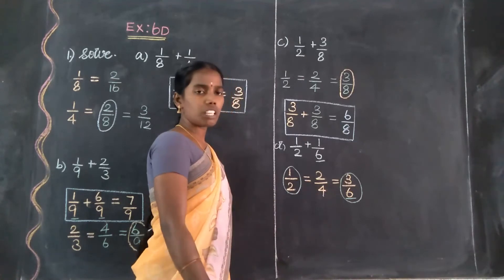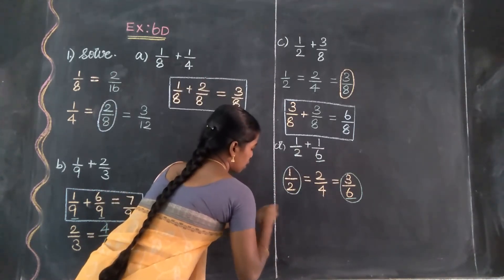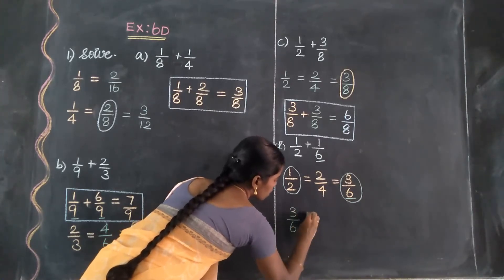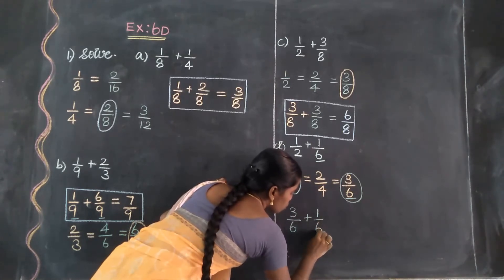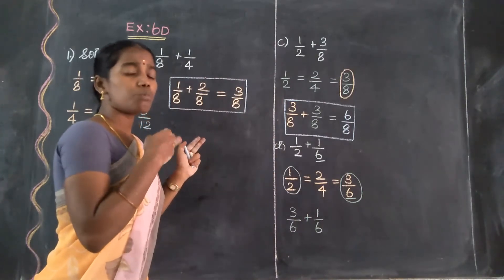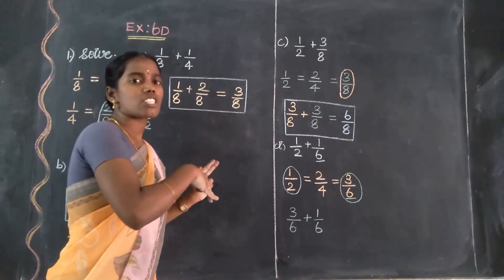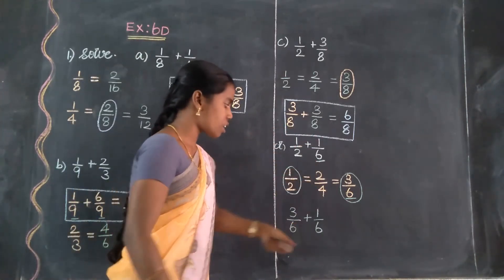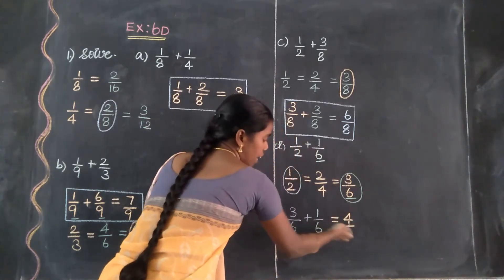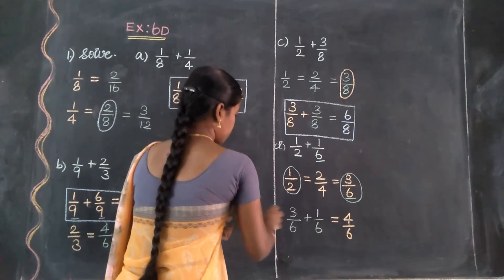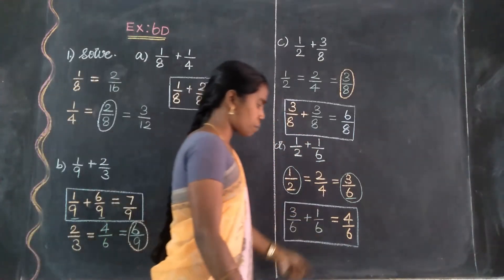Apply this: 1 by 2 is equal to 3 by 6. So, 3 by 6 plus 1 by 6. The first fraction 1 by 2 changes to 3 by 6. The second fraction 1 by 6 has the highest denominator and does not change. Since it is a like fraction, add the numerators: 3 plus 1 equals 4, giving 4 by 6.